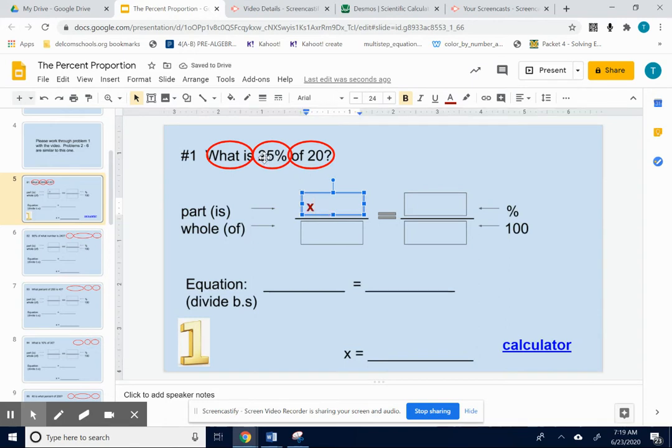Okay, next thing you see is 25%. Okay, so the percent number is 25. And the percent number goes on the top right. Type that in.